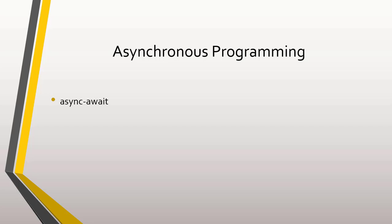The idea is that we can use async to mark a method as asynchronous, and with await, we can wait for an asynchronous operation in such a way that the original thread is not blocked. The normal thing is that the method marked with async returns a Task or Task<T>. The idea of Task is that it represents an asynchronous operation.